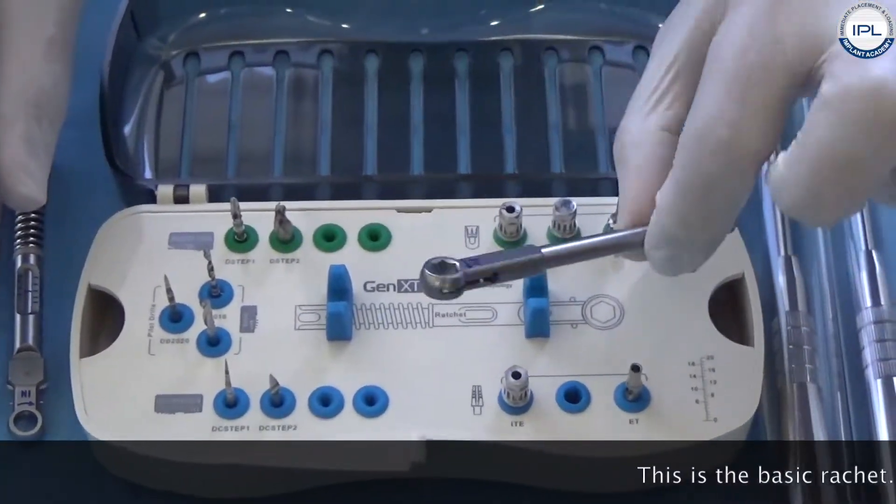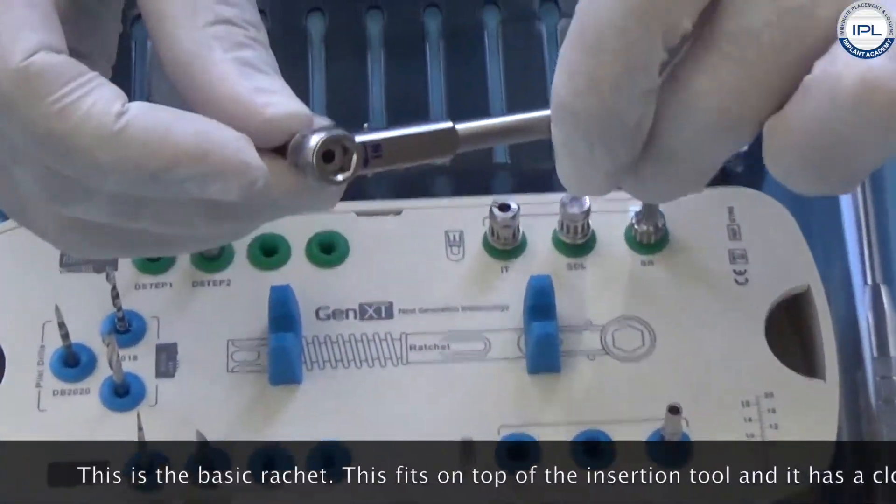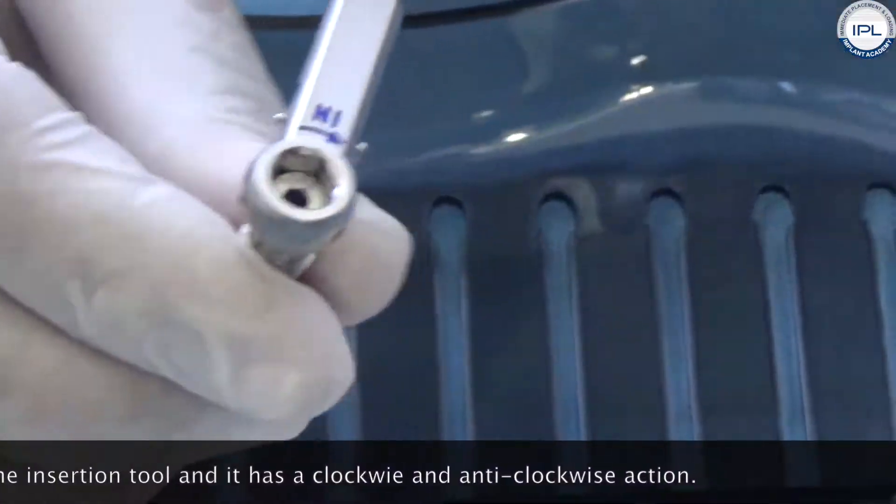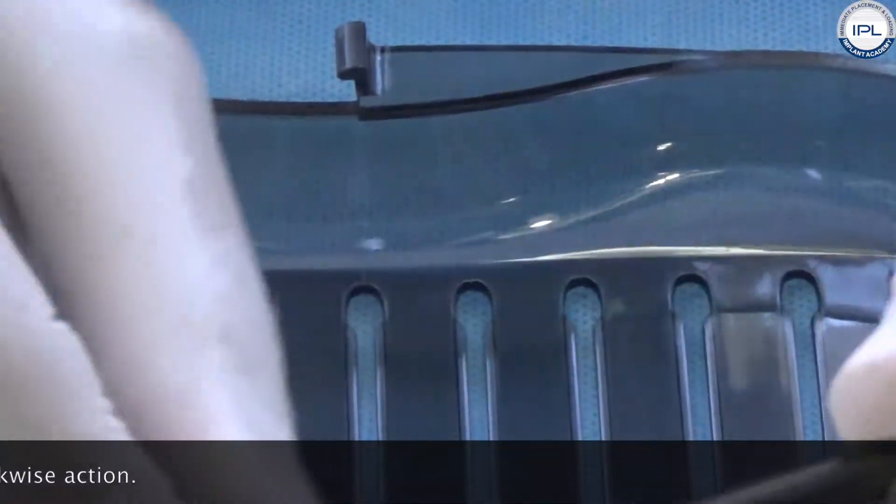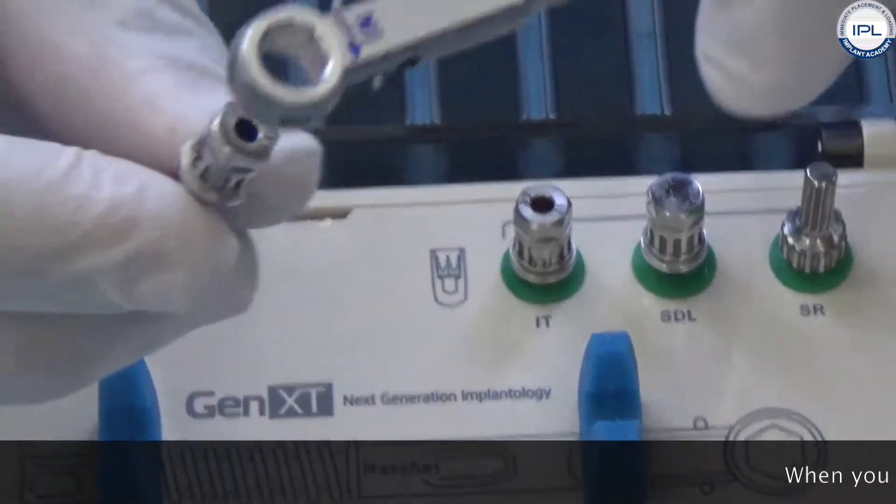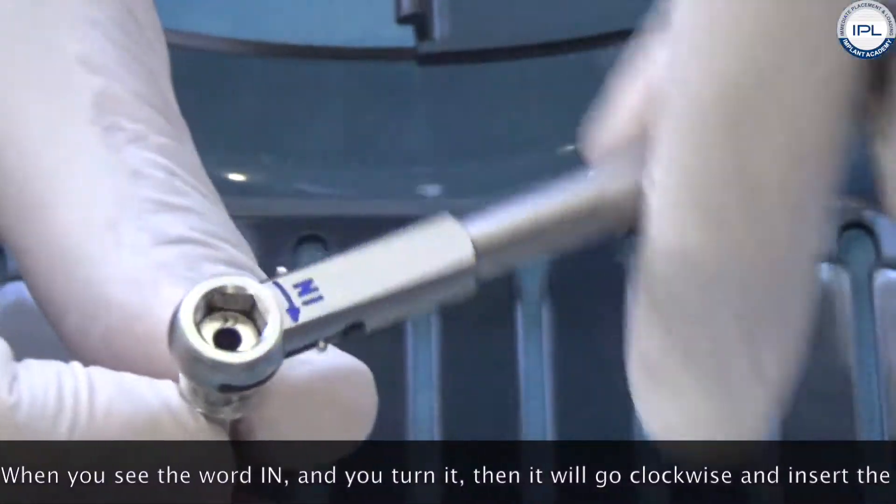Then this is the ratchet. This is the basic ratchet and this fits on top of the insertion tool. It has a clockwise and an anti-clockwise action. So you must see the word in. When you see the word in, when you turn it, it will go clockwise and it will insert your implant.